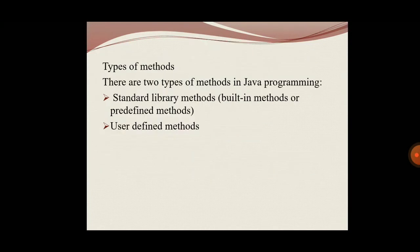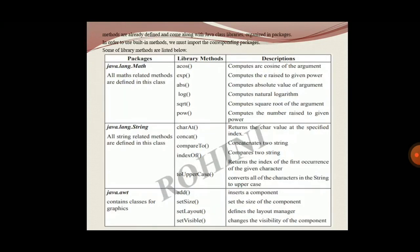The next is the types of methods. There are two types of methods: standard library methods, which are methods already available in the library, and user-defined methods, which are methods defined by the user. Standard library methods are built-in methods in Java programming to handle specific tasks such as mathematical computations, IO processing, graphics, string handling, etc. These methods are already defined and come along with the Java class library organized in packages.